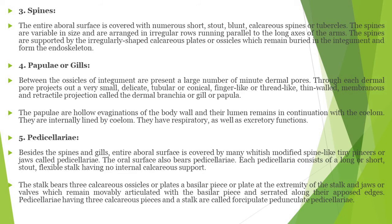Gills: Between the ossicles of the integument are present a large number of minute dermal pores. Each dermal pore projects out a very small, delicate, tubular, conical, finger-like structure called dermal branchiae or gill pouches. Respiration occurs through the whole body surface, and the dermal branchiae are present on both oral and aboral surfaces.